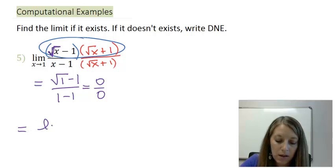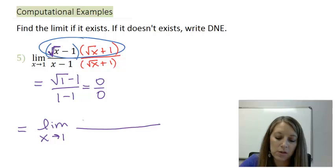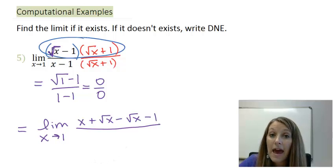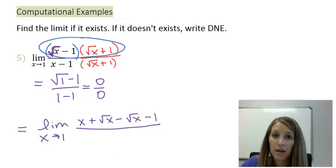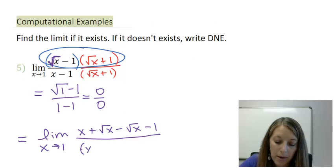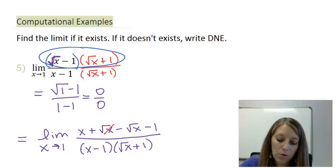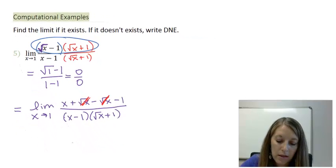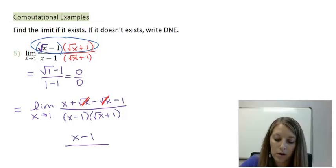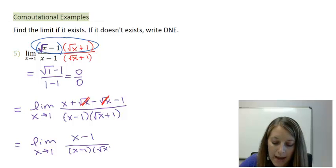I want to simplify the numerator by foiling those out. That simplifies to be the limit as x approaches 1. When I FOIL out my numerator, I get root x times root x, which gives me x. Root x times 1, which is a positive root x. Inside, negative 1 times root x, so negative root x. And last, negative 1 times 1 gives me negative 1. I'm just going to copy down my denominator: x minus 1 and root x plus 1. Let me simplify the numerator. Root x and root x cancels. And that leaves me with an x minus 1 in the numerator. So, officially I have the limit as x is approaching 1 of x minus 1 over x minus 1 and root x plus 1.